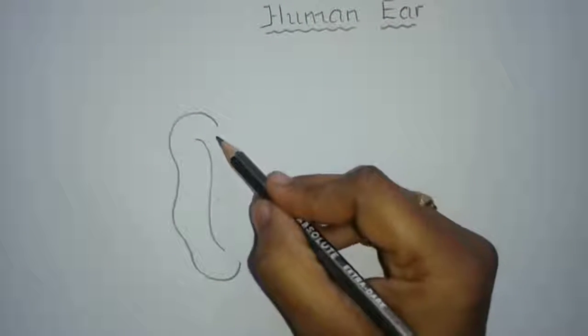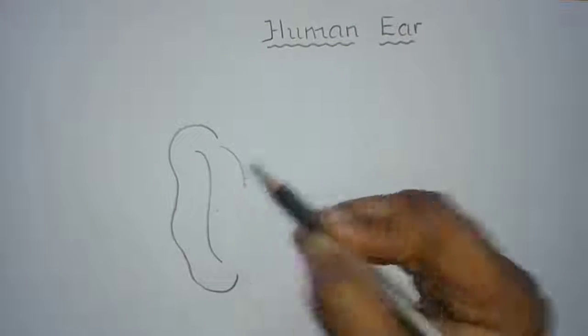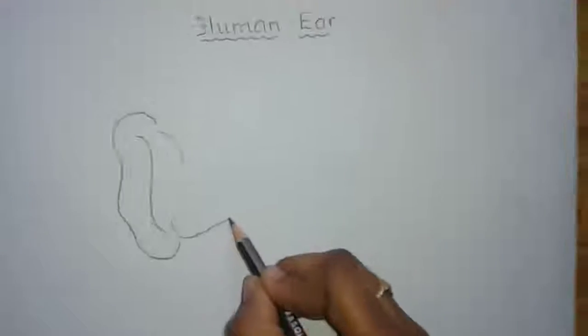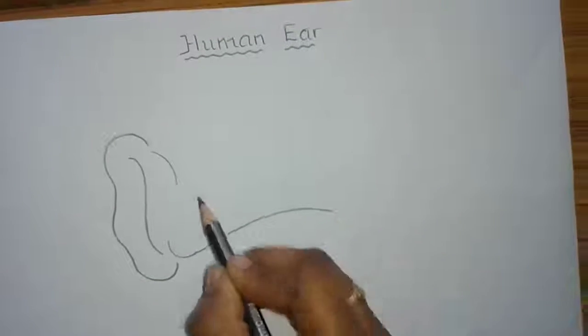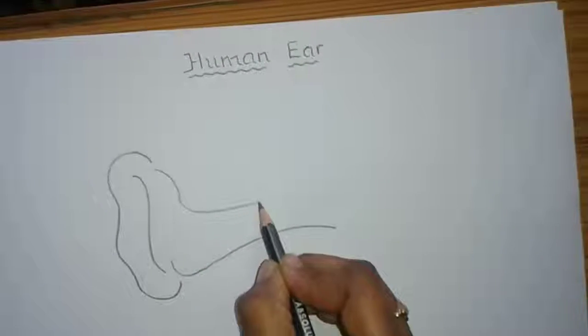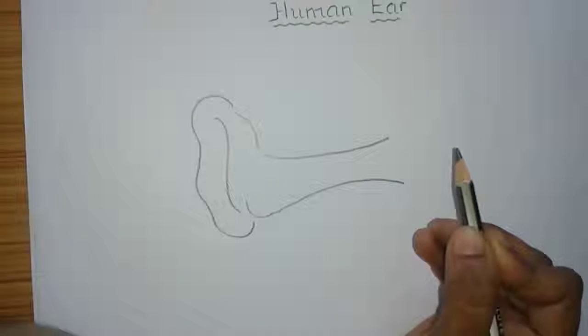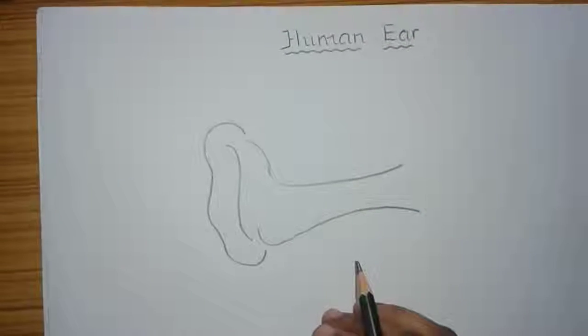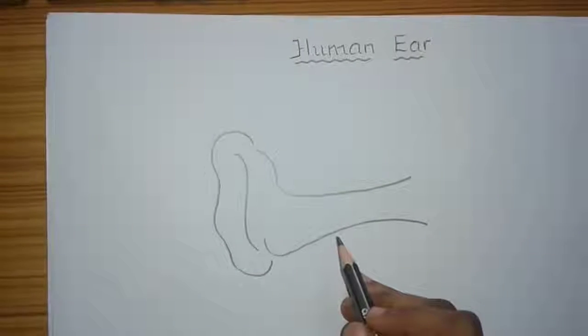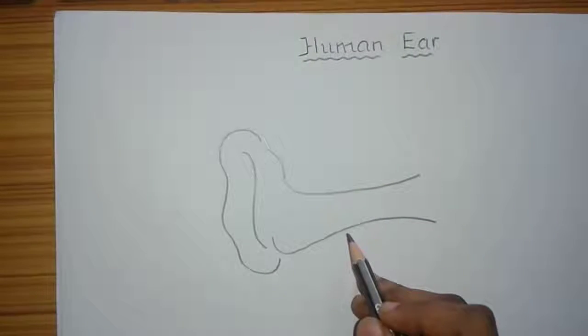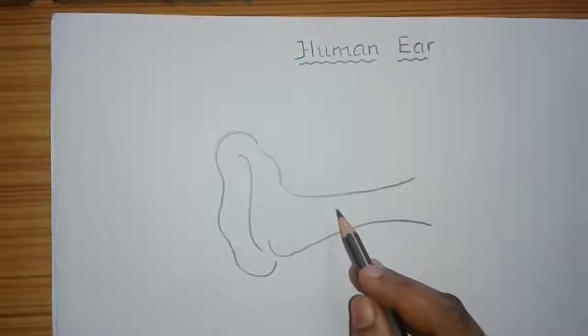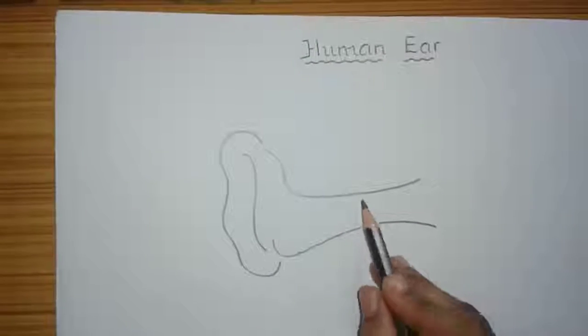Now draw the auditory canal. Just make a curved line like this. This is the auditory canal. Auditory canal prevents dust. The hairs present in the auditory canal prevent dust particles from entering, and wax which is produced in the auditory canal entangles small organisms and dust.